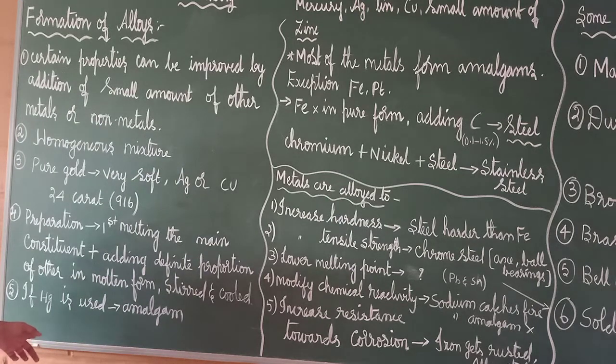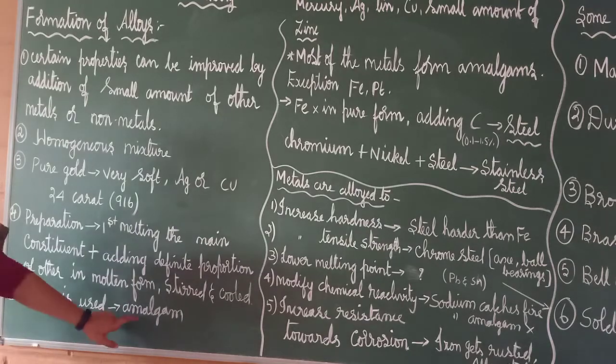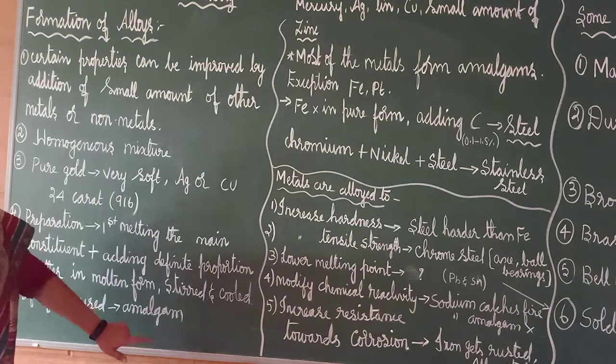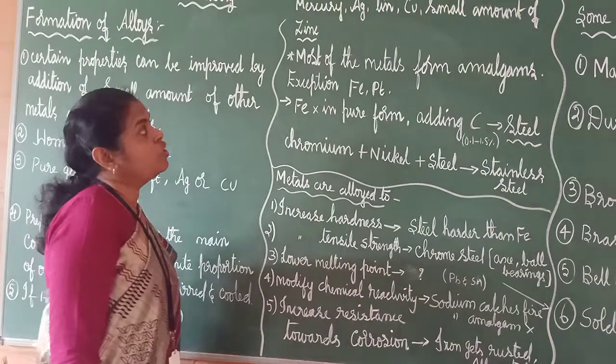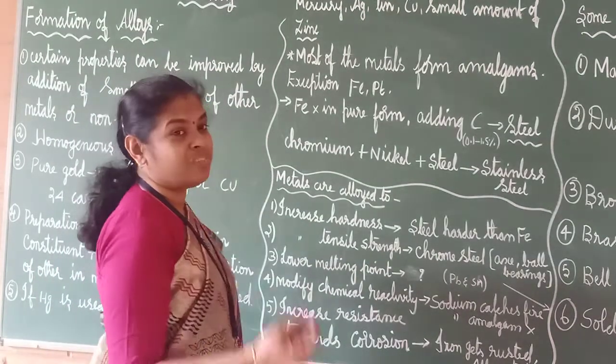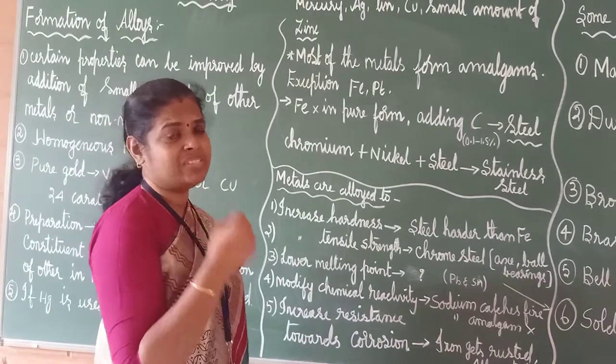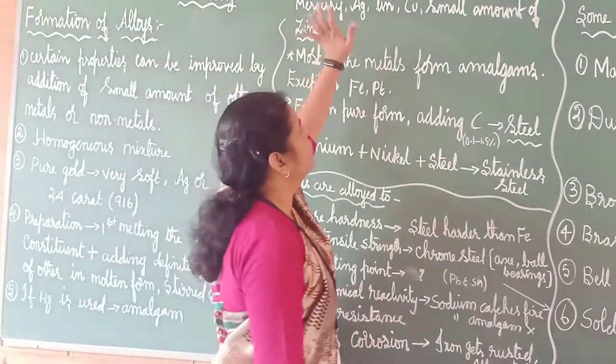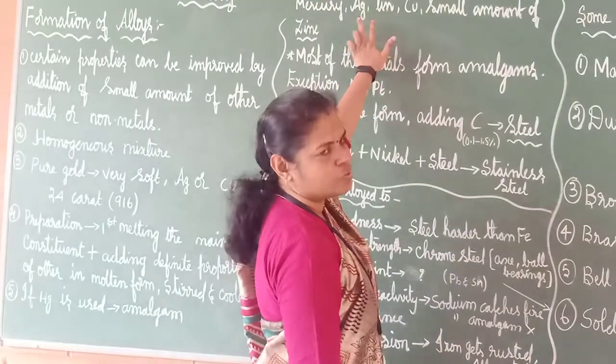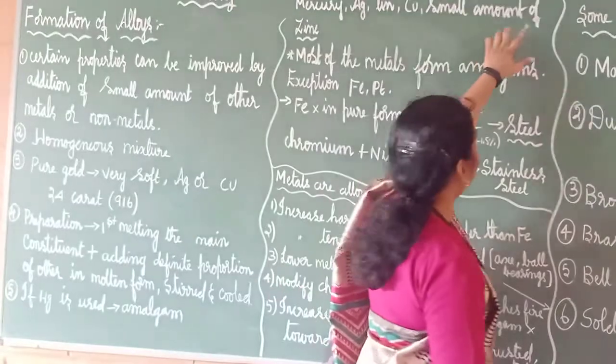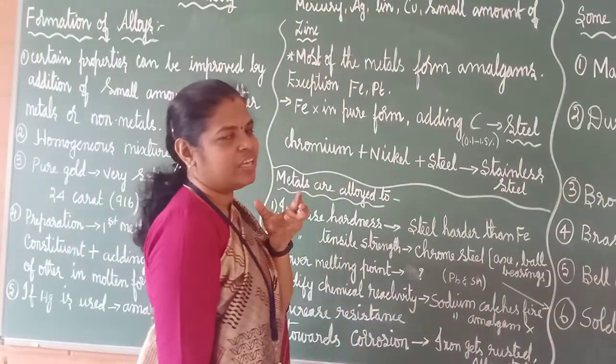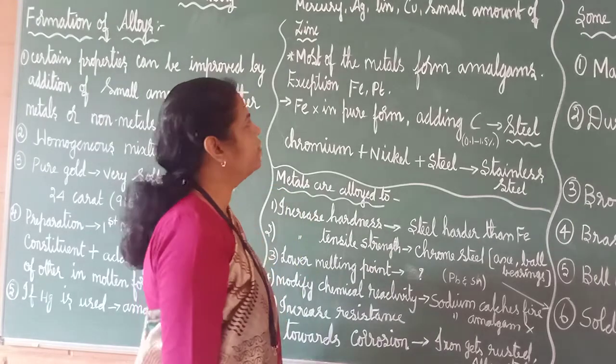So, the other interesting thing is, if you are using mercury, then that alloy is called as amalgam. Mercury, if it is added, then that alloy is called as amalgam. For example, sodium amalgam. So, dental alloy is there. For filling the cavities, they will use. For example, mercury, Ag - I have written like this because you should know this name also. Ag means what? Tin. Cu. And the small amount of zinc will be added. That will give the dental alloy which is used to fill the cavities.